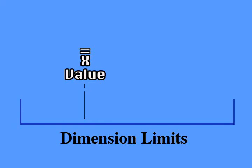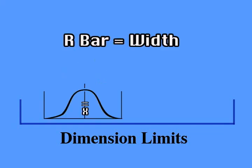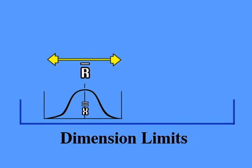Use the r-bar value to find the width of the distribution. Since the x-double-bar value represents the middle of the distribution, it would be the highest point in the bell-shaped normal distribution curve. The r-bar value, when superimposed over the x-double-bar, will show you the ends of the curve.